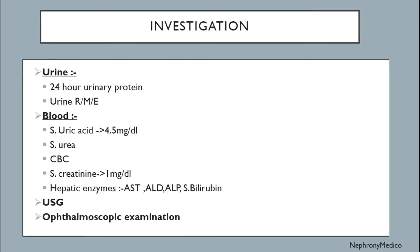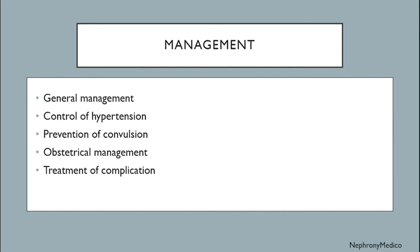Investigations include: urine — 24-hour urinary protein, urine RME; blood — serum uric acid more than or equal to 4.5 mg/dL, serum urea, CBC, serum creatinine, and hepatic enzymes like AST, ALT, ALP, and serum bilirubin; ultrasonography; and ophthalmoscopic examination. Management involves general measures, control of hypertension, prevention of convulsion, obstetrical management, and treatment of complications.